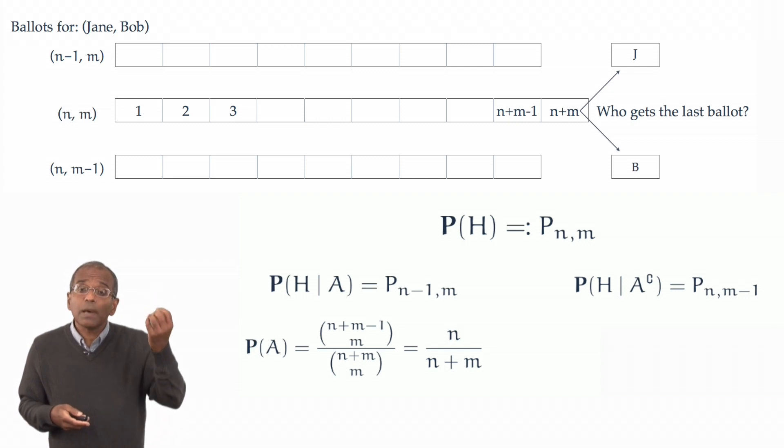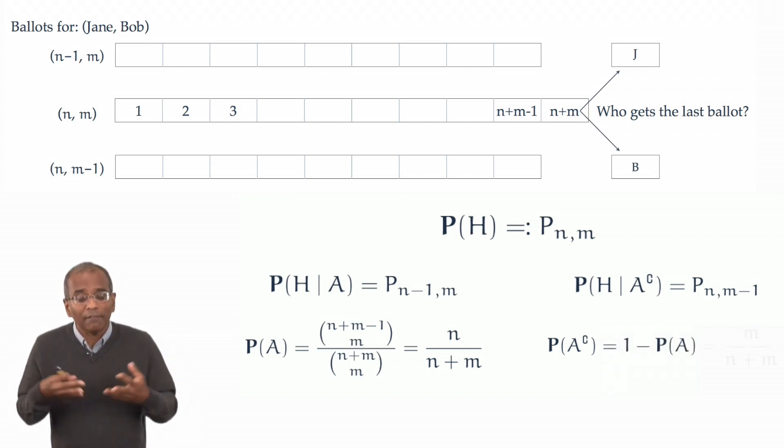What are the chances the last ballot goes to Bob? Well, this is the event, the complement of A, and of course we could use a similar calculation or simply appeal to additivity and subtract the probability away from 1, and we find this is, again, very intuitive, very natural, m over m plus m.